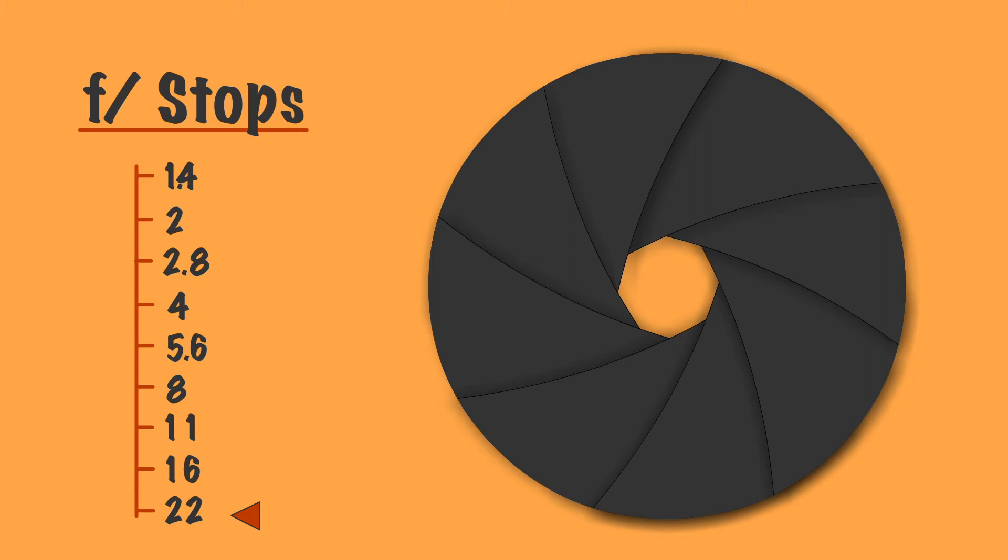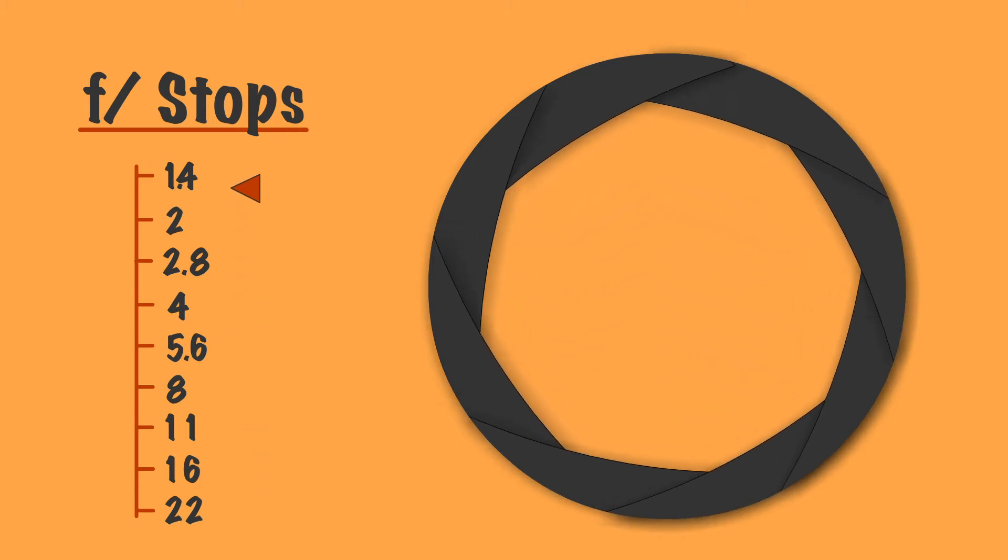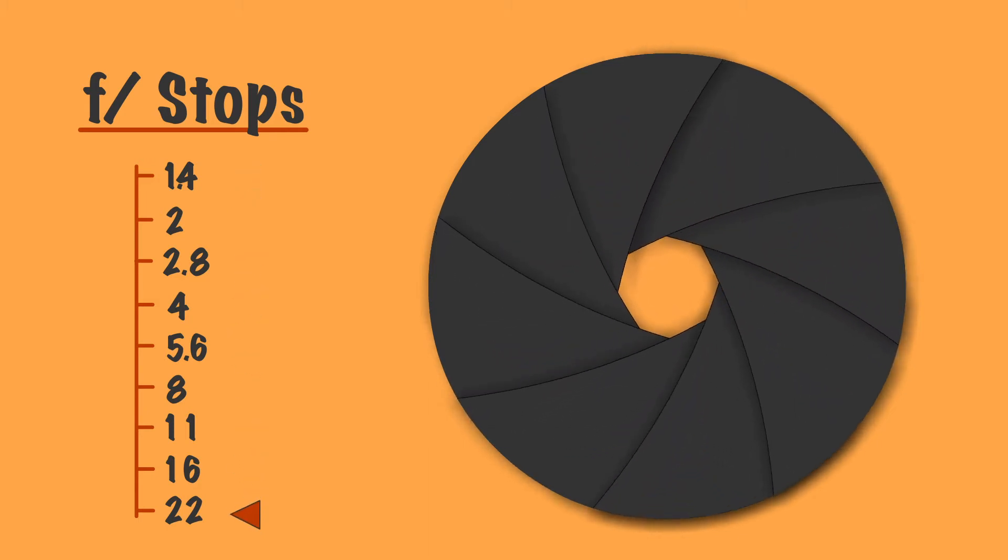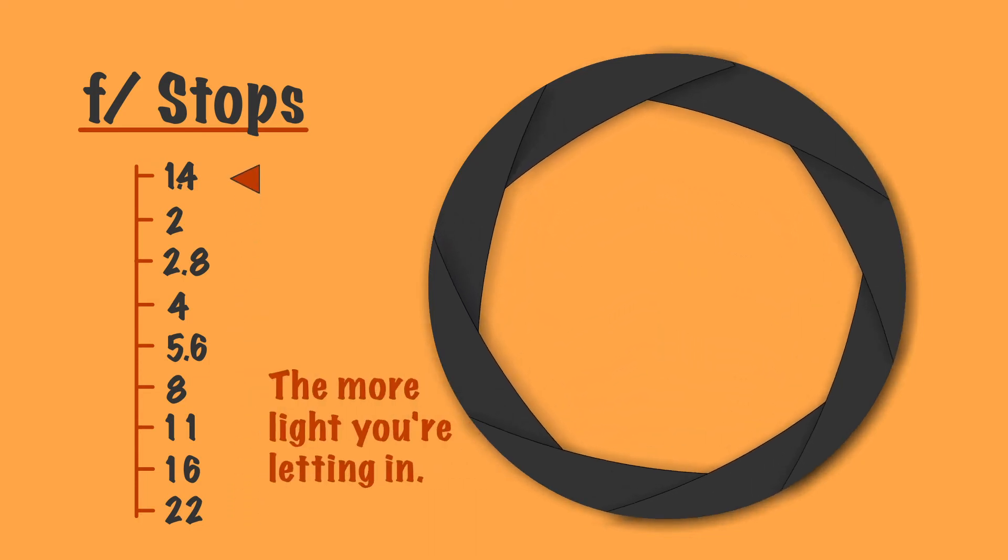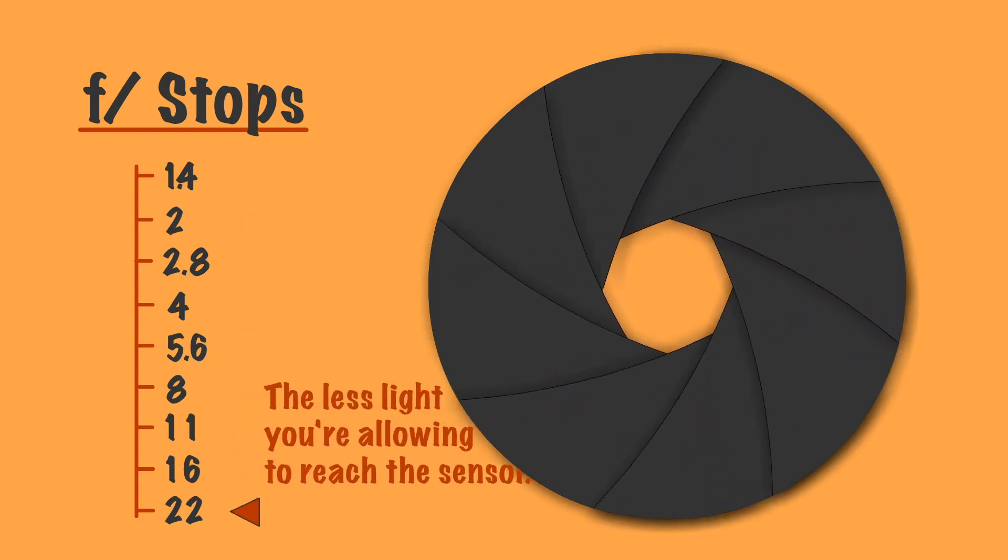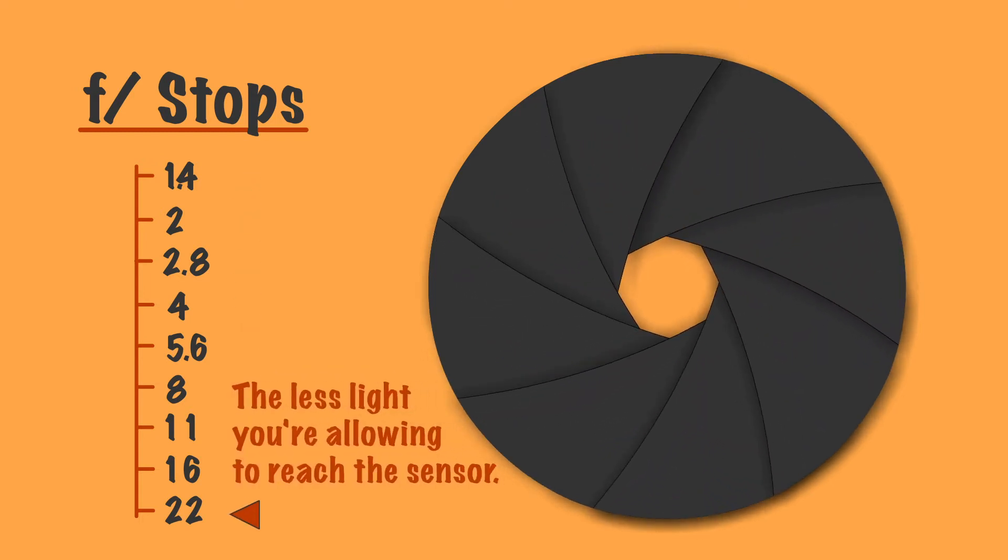When adjusting the aperture of a lens, you can either open it or close it down. Confusingly, the lower the aperture number, the more light you're letting in, but the higher the aperture, the less light you're allowing to reach the sensor.